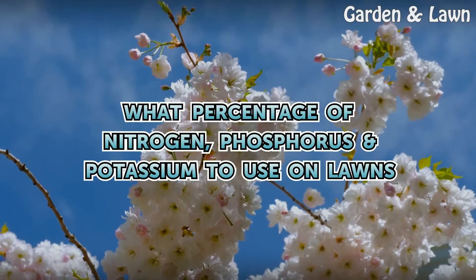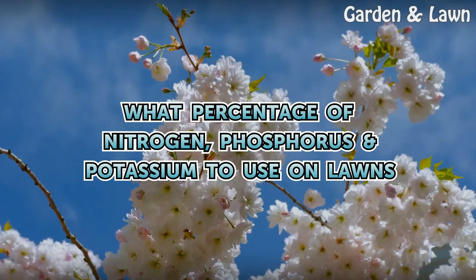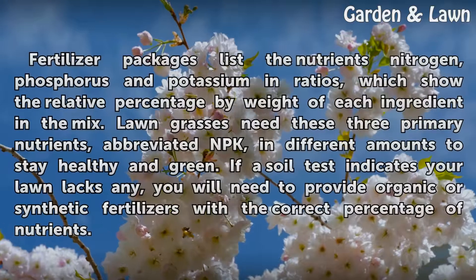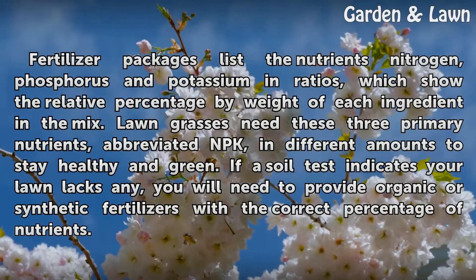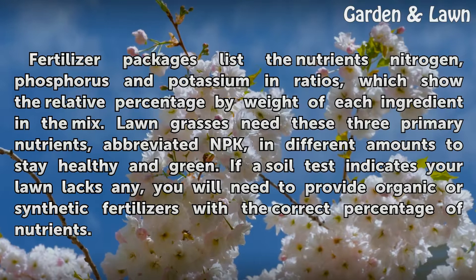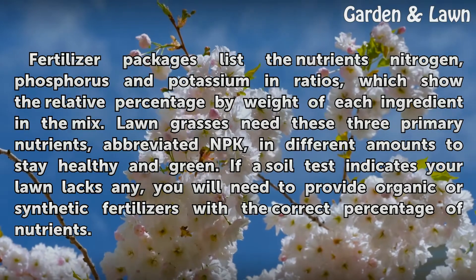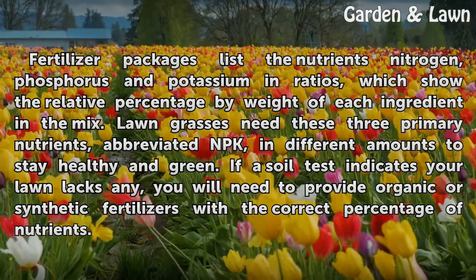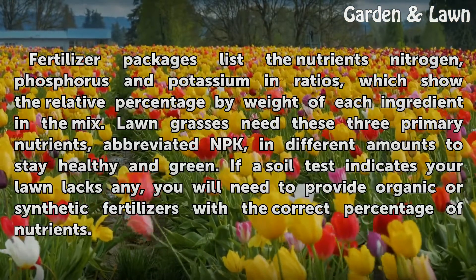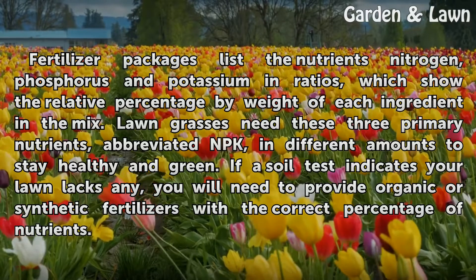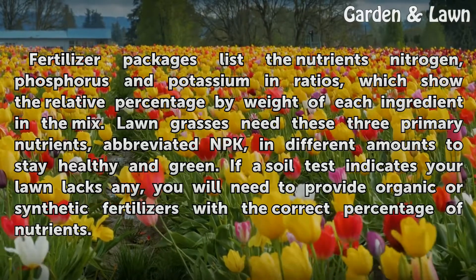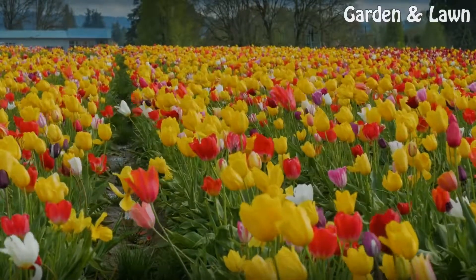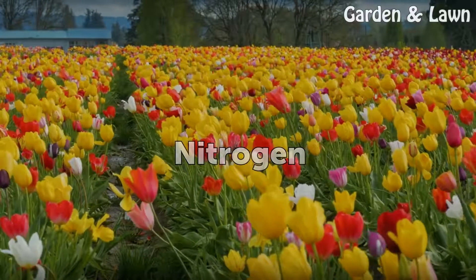What percentage of nitrogen, phosphorus, and potassium to use on lawns? Fertilizer packages list the nutrients nitrogen, phosphorus, and potassium in ratios which show the relative percentage by weight of each ingredient in the mix. Lawn grasses need these three primary nutrients, abbreviated NPK, in different amounts to stay healthy and green. If a soil test indicates your lawn lacks any, you will need to provide organic or synthetic fertilizers with the correct percentage of nutrients.